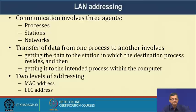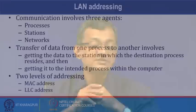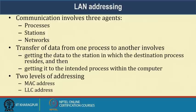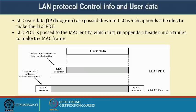Another important aspect is addressing. Communication involves three things: processes, stations, and networks. The transfer of data from one process to another involves getting data to the station where the destination process resides, and then to the intended process within that computer. There are two levels of addressing: MAC addressing (or hardware address) and LLC addressing, which identifies the network service access point.